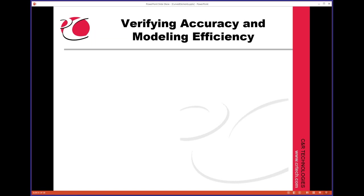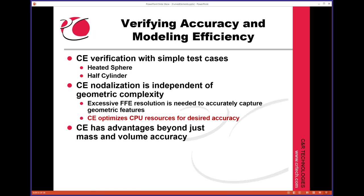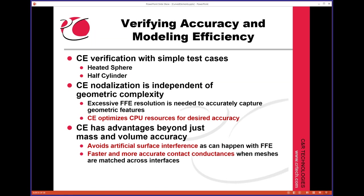Just pretty much the meat here, what we want to talk about. We want to show a couple verification cases. We're going to do a little heated sphere and a half of a cylinder that's radiating to space. And the main point we want to make is just to show you that your nodalization isn't driven by matching the geometric complexity. You can let the nodalization change depending on what you need on your problem. And we want to talk a few other things about curved elements.